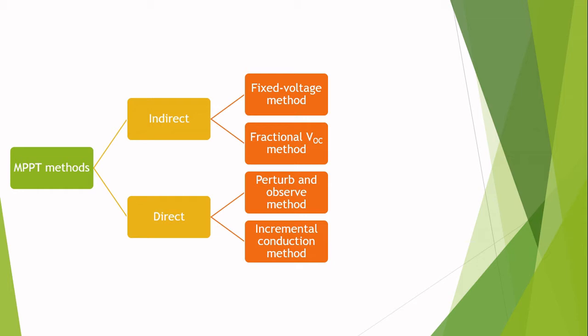It is the purpose of the maximum power point tracking system to sample the output of the photovoltaic cell and apply the proper resistance to obtain maximum power for any given environmental condition. Maximum power point tracking devices are typically integrated into electrical power converter systems that provide voltage or current conversion, filtering, and regulation for various types of loads including power grids and batteries.